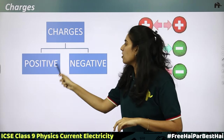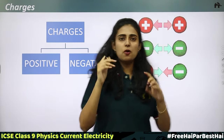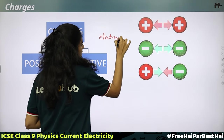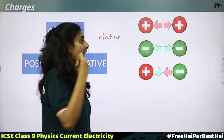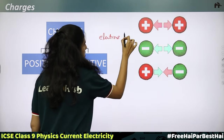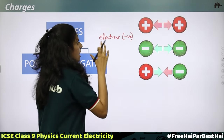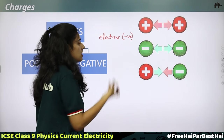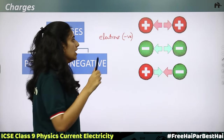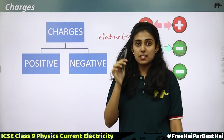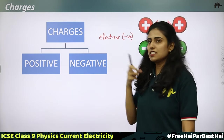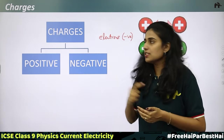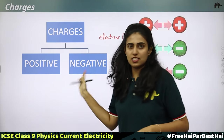There are two types of charges: positive charge and negative charge. If an object gains electrons, it becomes negatively charged. If it is losing electrons, it becomes positively charged. When I rub this pen on my hair, electrons are getting transferred from my hair to the pen, so the pen is getting negatively charged. This is how charging happens.